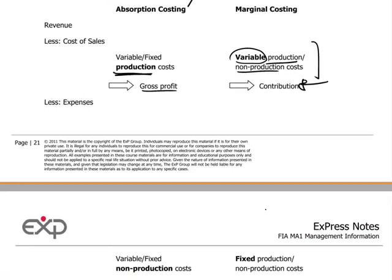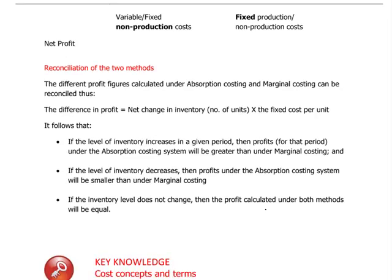The other thing to notice when comparing the two methods is that absorption costing and marginal costing profits differ from each other in a given year. For example, in year one the marginal costing profit was $20,200, whereas the absorption costing profit was $20,950 — for the same year, the same reality, the same number of units produced and sold. And yet the two methods give us different profit figures.